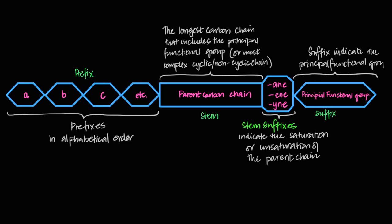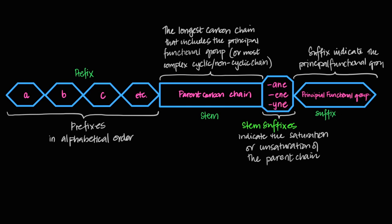We'll build up naming conventions covering alkanes, haloalkanes, alkenes, alcohols, and carbonyls and acids. The suffix at the end of the name is the principal functional group. The stem has two parts: the actual stem tells me the number of carbon atoms in the chain — propanoic acid would be 'prop' meaning three carbons — and the stem suffix tells me how the carbon-carbon bonds are bonded. For example, 'propan' means all single bonds; if double, it would be 'propene'.